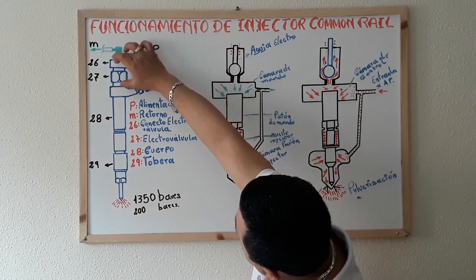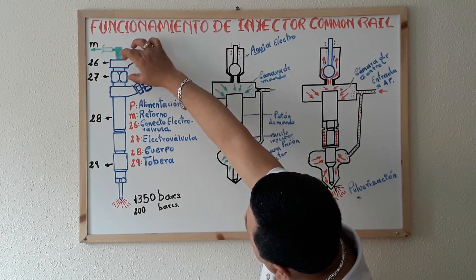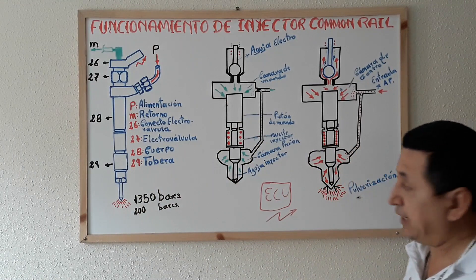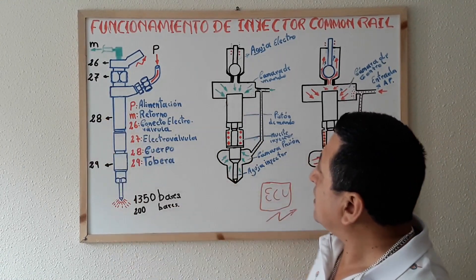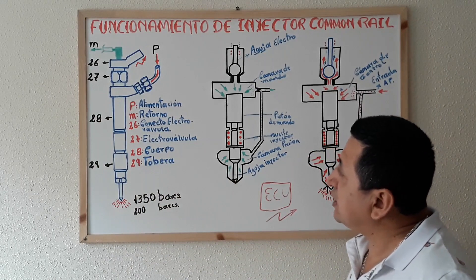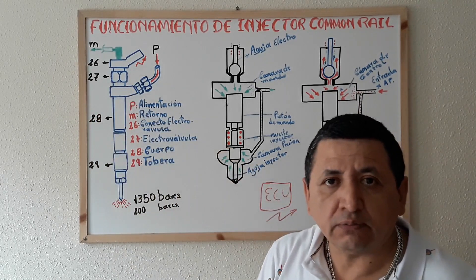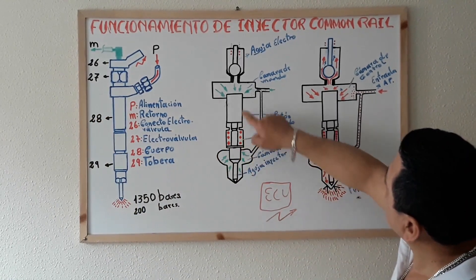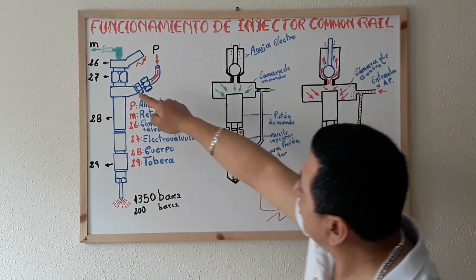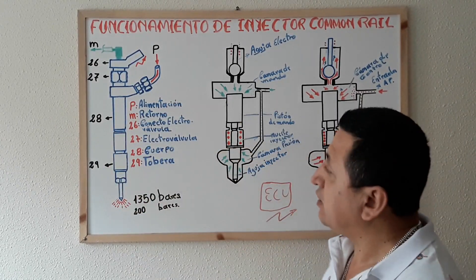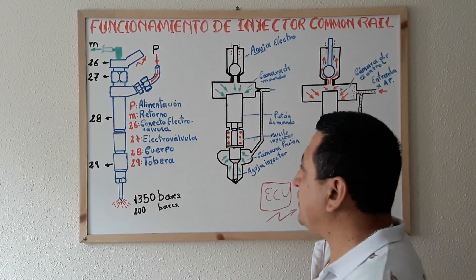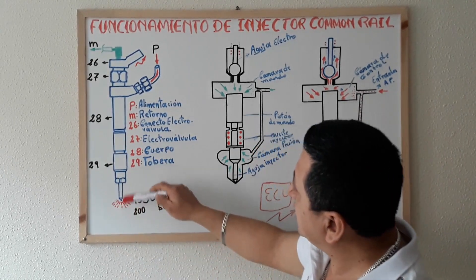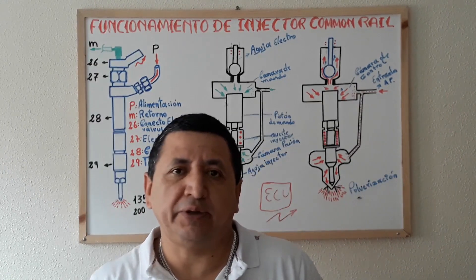Number 26 is the connector, and number 27 is the solenoid valve — the solenoid valve composed with the connector. Number 28 would be the injector body, or the injector housing — everything housed inside this casing is the injector body. And finally we have the nozzle, the atomization nozzle where the needle is located inside.